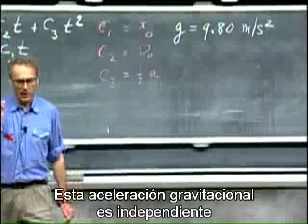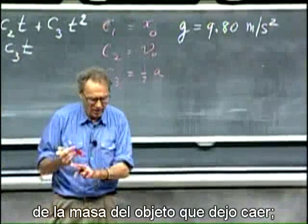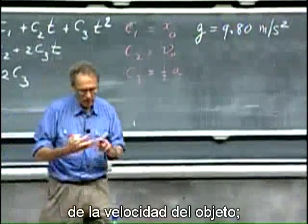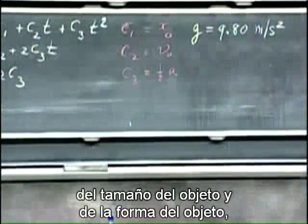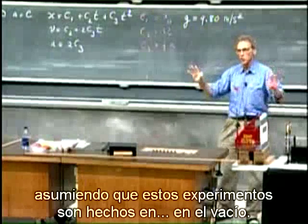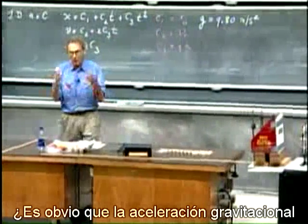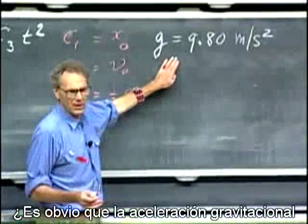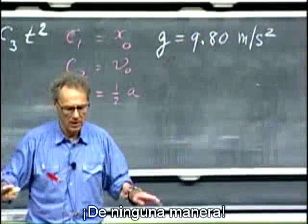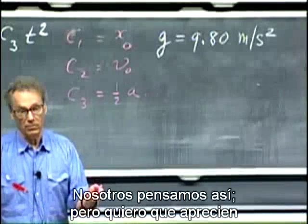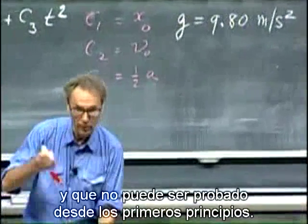This gravitational acceleration is independent of the mass of the object that I drop, of the speed of the object, of the chemical composition of the object, of the size of the object, and of the shape of the object — assuming that we have no air drag, assuming that these experiments are done in vacuum. Is it obvious that the gravitational acceleration is independent of all these quantities? By no means. Is it true? We think so. But I want you to appreciate that it is not obvious and it cannot be proven from first principles.